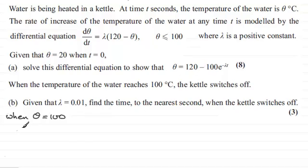When θ = 100, if we substitute it into our equation, we have 100 = 120 - 100e^(-λt). Now λ is 0.01, so multiplying that with t.